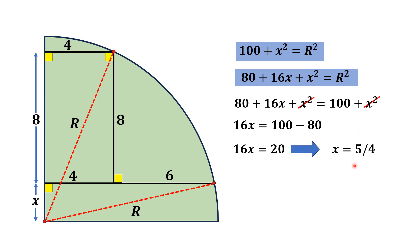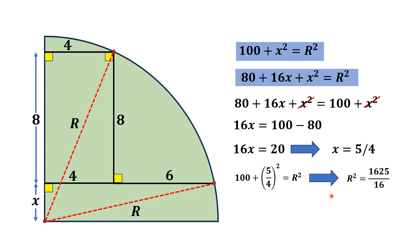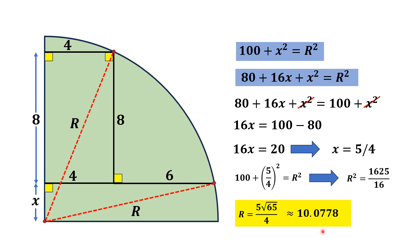Substituting x = 5/4 into the first equation: 100 + (5/4)² = R², so R² = 100 + 25/16 = 1625/16. Taking the square root and neglecting the negative root since length cannot be negative, R = 5√65 / 4, which is approximately equal to 10.0778 units. That is the answer. Thank you for watching.